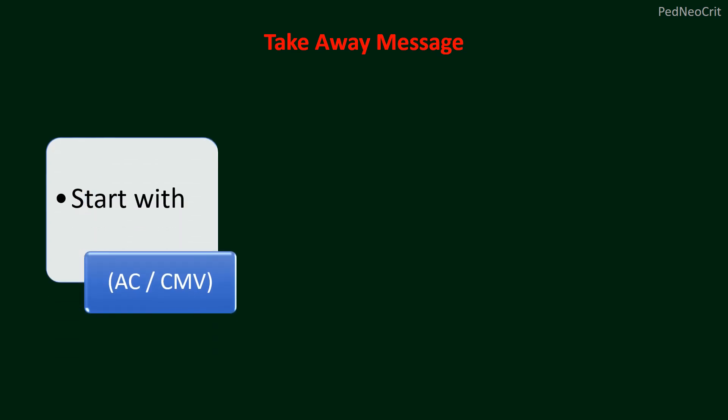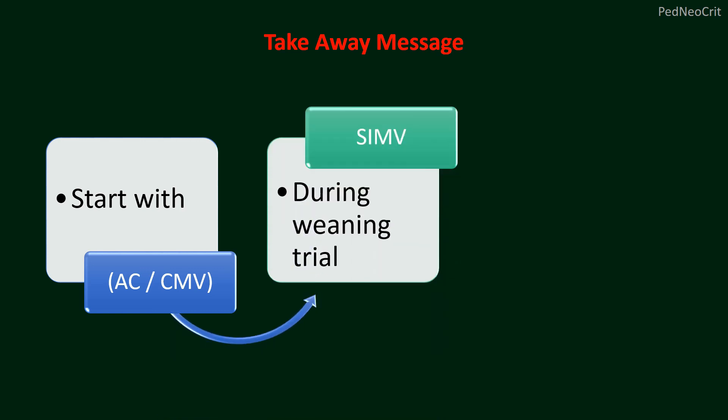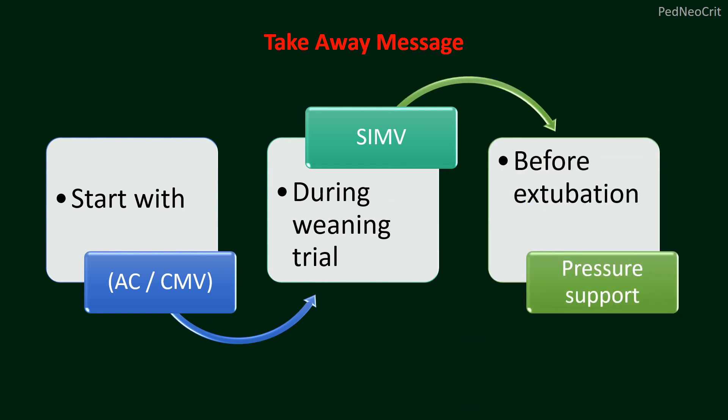How will you start? You can start with assist control or CMV. When your patient is improving and you are planning to wean, then you can switch to SIMV. Alternatively, if you are ventilating in CMV or assist control and the patient is hyperventilating with respiratory alkalosis and too much washout of carbon dioxide, you can also switch to SIMV. From SIMV, before weaning, you can give a short trial period at pressure support mode for half an hour to two hours. In older children or adults, more than two hours can be given, but in children, half an hour to two hours is adequate. After this trial period, you can extubate the patient. It is better to avoid pressure support in neonates — neonates can be extubated directly from SIMV.